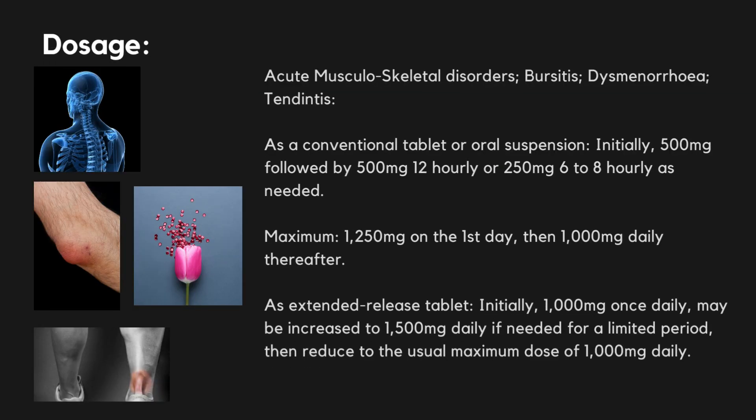Acute Musculoskeletal Disorders, Bursitis, Dysmenorrhea, Tendinitis: As a conventional tablet or oral suspension, initially 500 mg followed by 500 mg every 12 hours or 250 mg every 6–8 hours as needed. Maximum 1250 mg on the first day, then 1000 mg daily thereafter. As an extended-release tablet, initially 1000 mg once daily, may be increased to 1500 mg daily if needed for a limited period, then reduced to the usual maximum dose of 1000 mg daily.